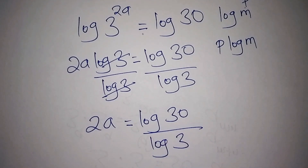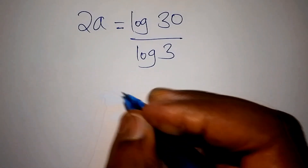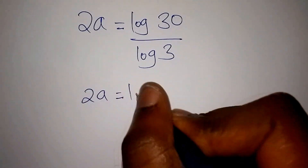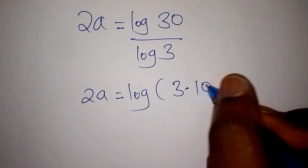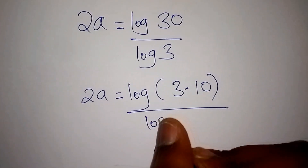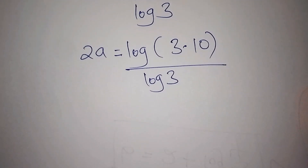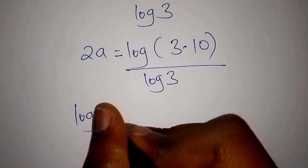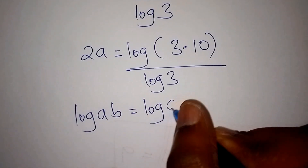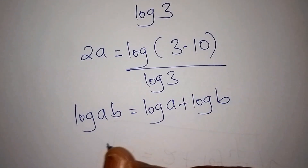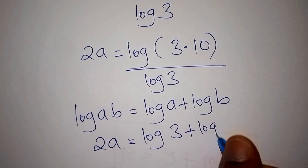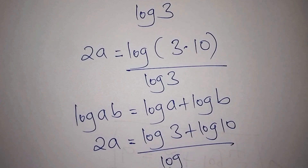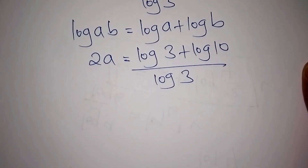Let us simplify this further. We can factorize by writing 2A equals log of 3 times 10, all over log of 3. Since log of AB equals log of A plus log of B, we now have 2A equals log of 3 plus log of 10, all over log of 3.